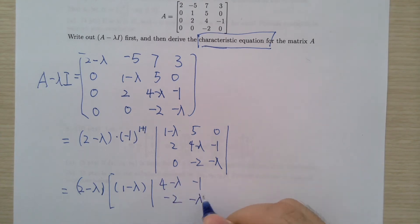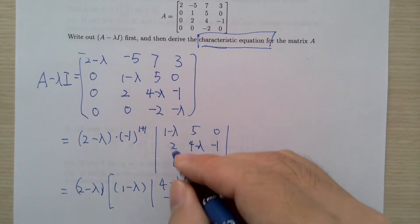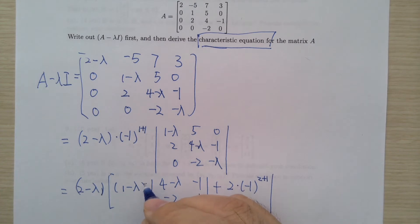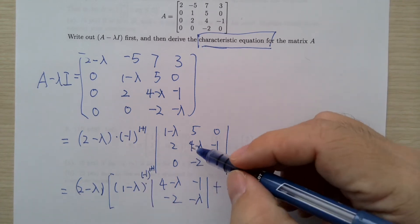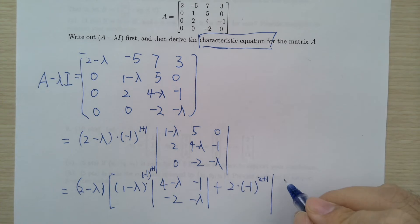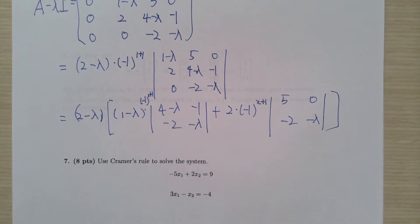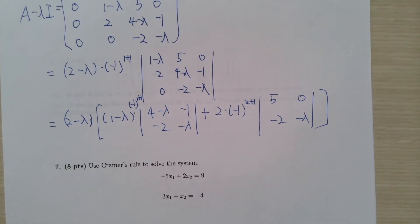That 2x2 block is (4 - λ), -1; -2, -λ. Plus 2 times (-1)^(2+1) — actually, I forgot to write (-1)^(1+1) earlier, but since it's already positive just ignore that — times the 2x2 determinant of 5, 0; -2, -λ.